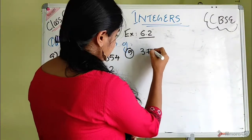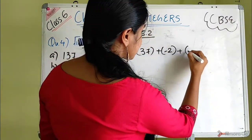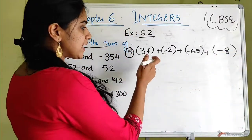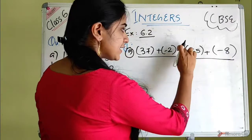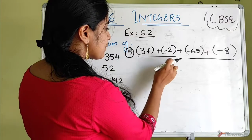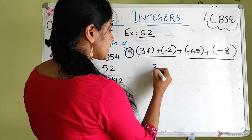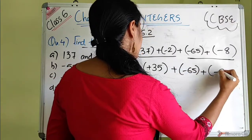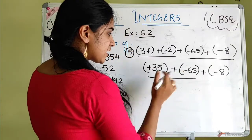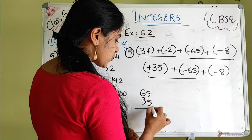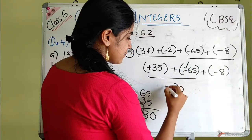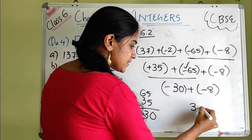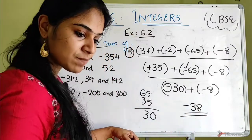Question B: 37 plus minus 2 plus minus 65 plus minus 8. First take 37 plus minus 2 — different signs, difference is 35, answer is positive 35. Then minus 65 plus minus 8 — same signs, add: 65 plus 8 equals 73, answer is minus 73. Now 35 plus minus 73 — different signs, 73 minus 35 is 38. Bigger value is negative, so the answer is minus 38.